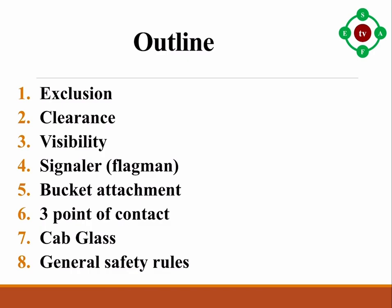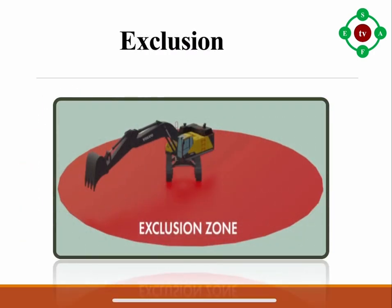Number six, three point of contact; number seven, cab glass; number eight, general safety rules. Exclusion: people should be kept away from areas of excavator operation by the provision of suitable barriers. Most excavator-related deaths involve a person working in the vicinity of the excavator rather than the driver. Bunting or fencing can be used to create and maintain a pedestrian exclusion area.